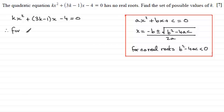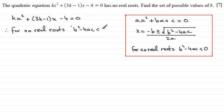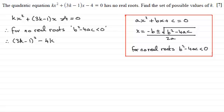So for no real roots, what we've got is that b squared minus 4ac — the discriminant — is less than 0. For this equation, b is 3k minus 1, so we've got 3k minus 1 all squared, minus 4 times a times c, where a is k and c is negative 4, and that has got to be less than 0.